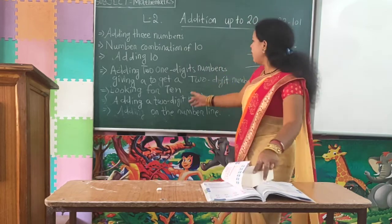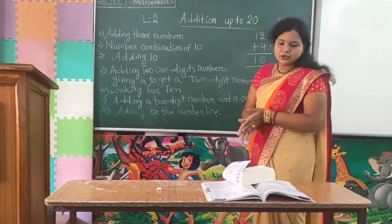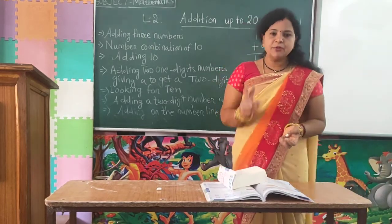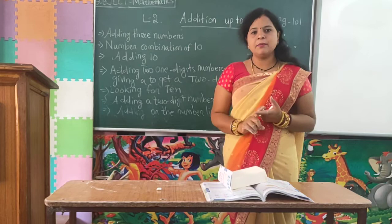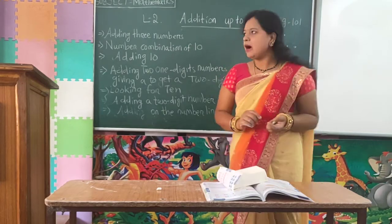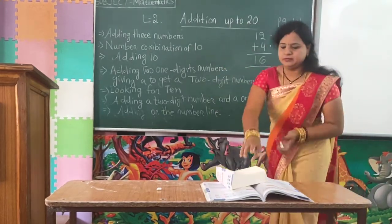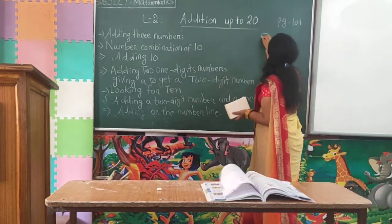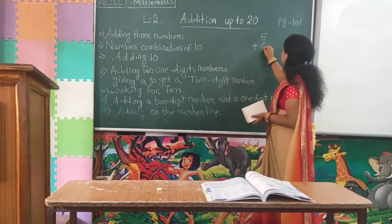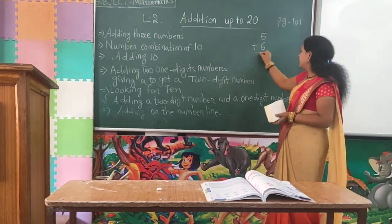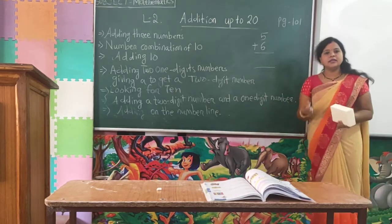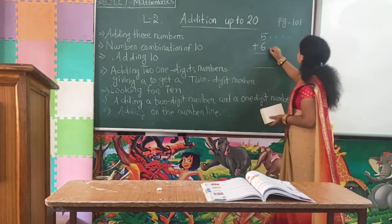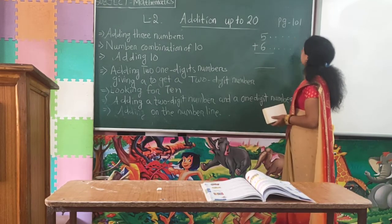Now we will learn about adding two 1-digit numbers to get a 2-digit number. You add two 1-digit numbers but the answer will be a 2-digit number. For example, 5 is a 1-digit number plus 6 is also a 1-digit number. When you add these 2 numbers the answer comes as a 2-digit number. Count the orbitals: 5 means 1, 2, 3, 4, 5 and 6 means 1, 2, 3, 4, 5, 6.